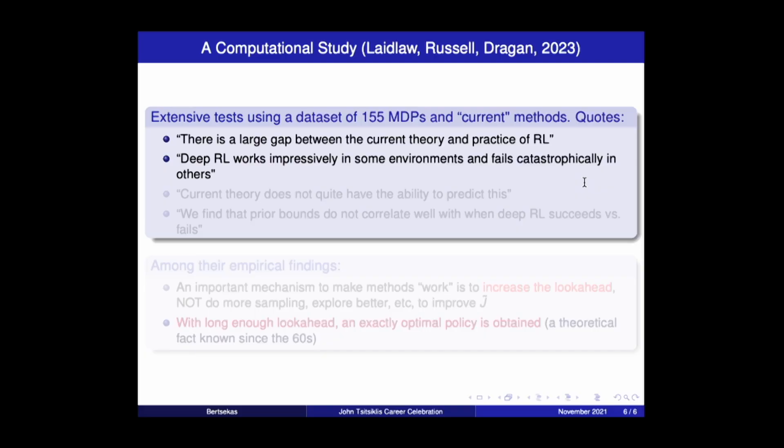And here are some quotations from this paper. There's a large gap between the current theory and practice of RL. Deep RL works impressively in some environments, and fails catastrophically in others. Current theory does not have the ability to predict this. We find that prior bounds do not correlate well with when deep reinforcement learning succeeds or fails.